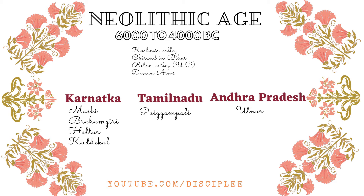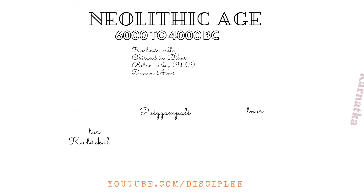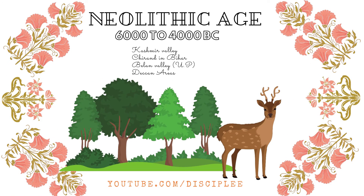Chief characteristic features of Neolithic culture are the practice of agriculture, domestication of animals, polishing of stone tools, and manufacture of pottery. The cultivation of plants and domestication of animals led to the emergence of village communities based on sedentary life. There was great improvement in technology for making tools; polished axes were found to be more effective tools for hunting.